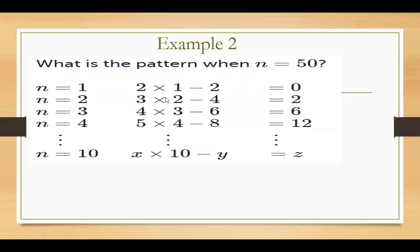If you see this pattern carefully, look at the first line: n is equal to 1, n is equal to 2, we have a 2 here. N is equal to 4, we have a 4 here. Just like that, n is equal to 10 and we have a 10 here. But the numbers in the first column are always 1 more than n: if n is 1, there is 2; if n is 2, there is 3.